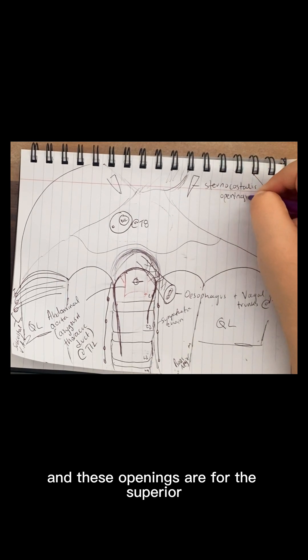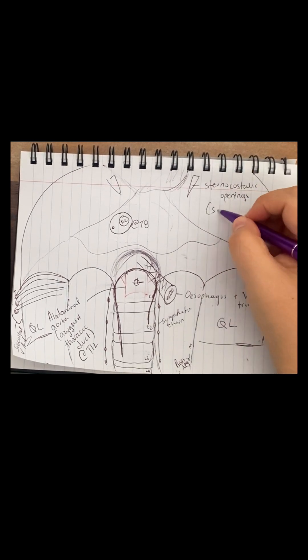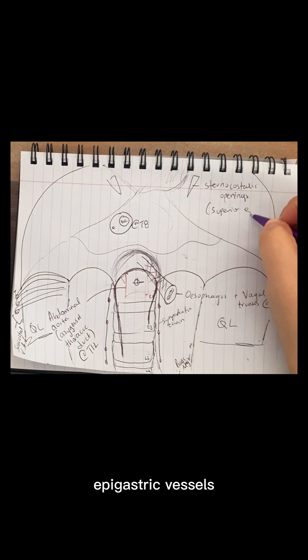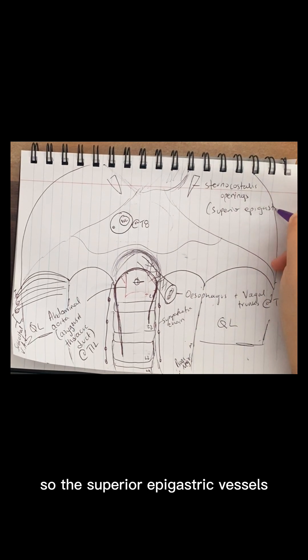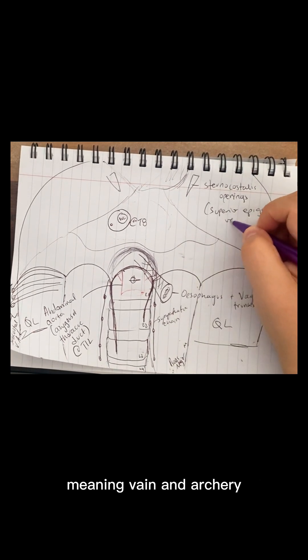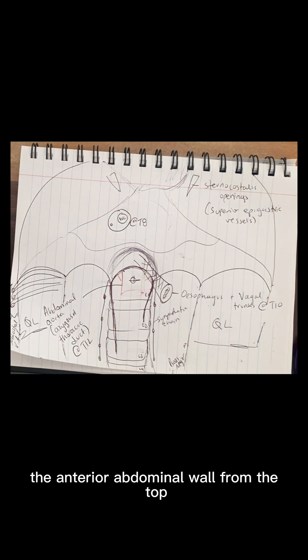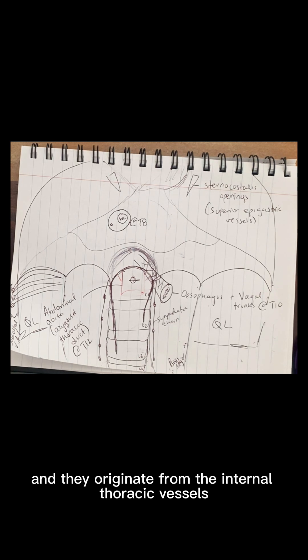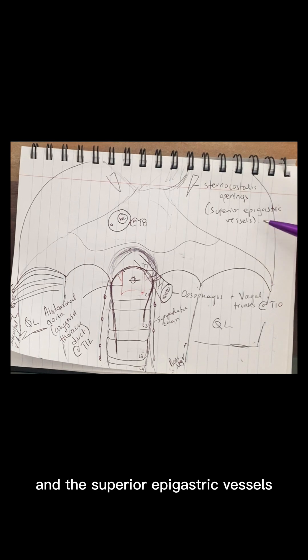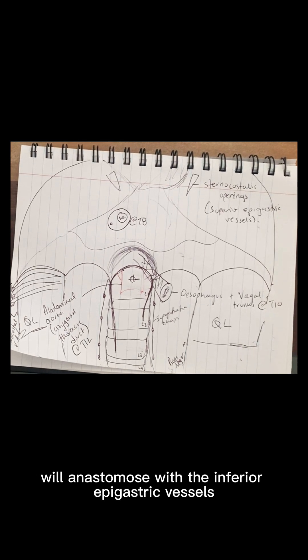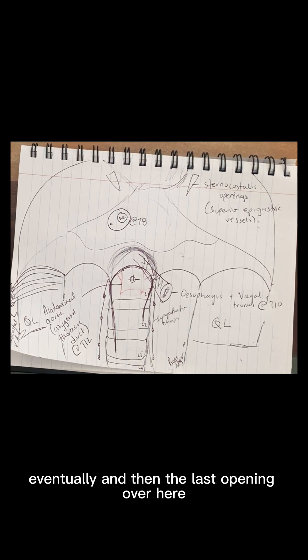And these openings are for the superior epigastric vessels. So the superior epigastric vessels, meaning vein and artery, these will be the vessels that will supply the anterior abdominal wall from the top. And they originate from the internal thoracic vessels. And the superior epigastric vessels will anastomose with the inferior epigastric vessels eventually.